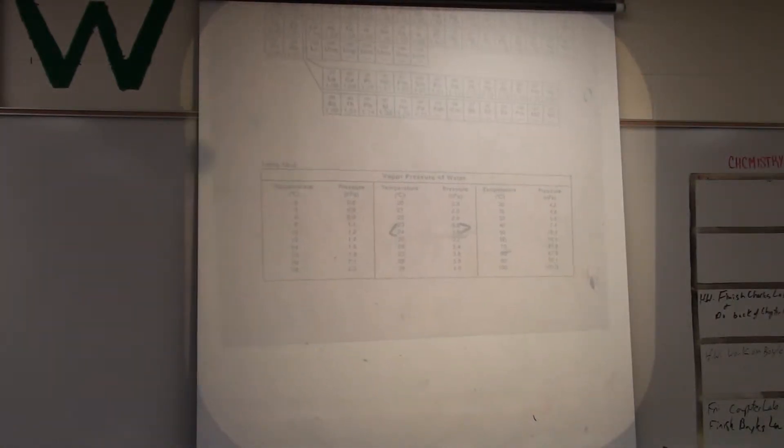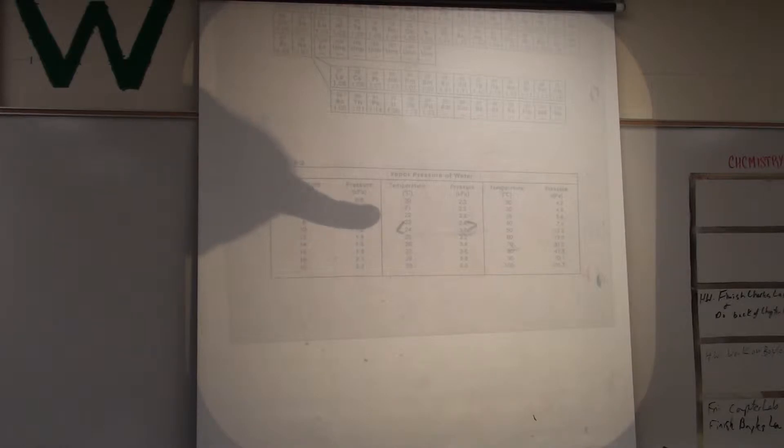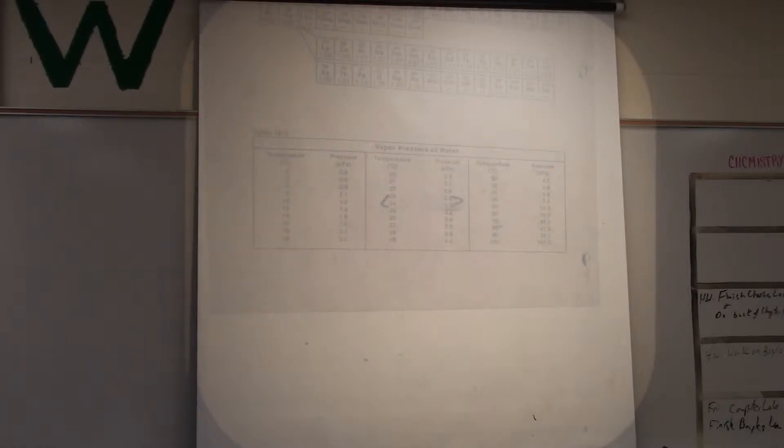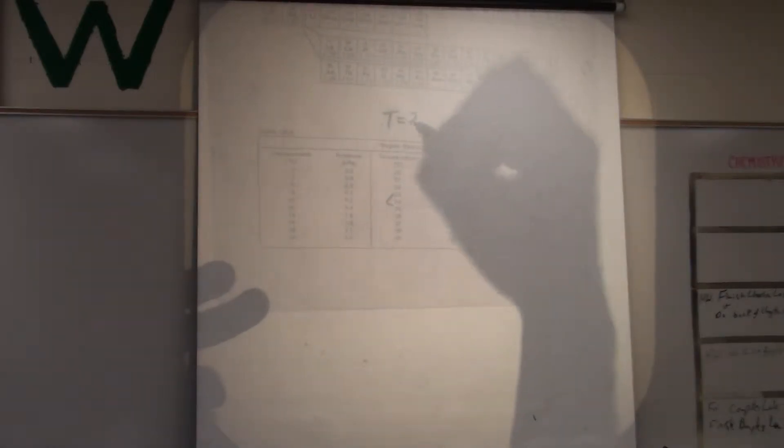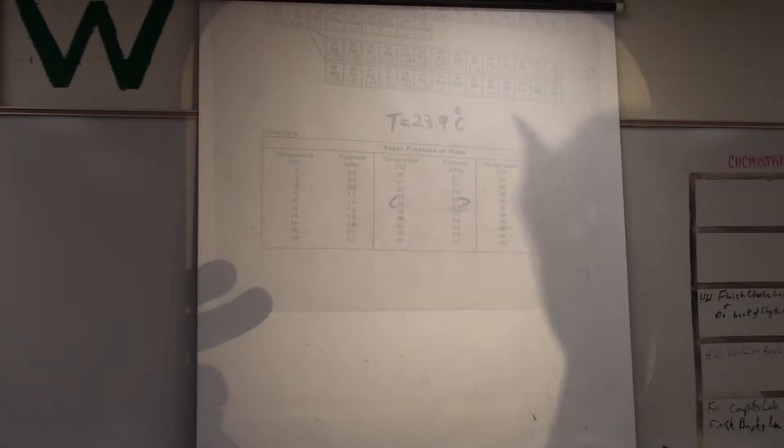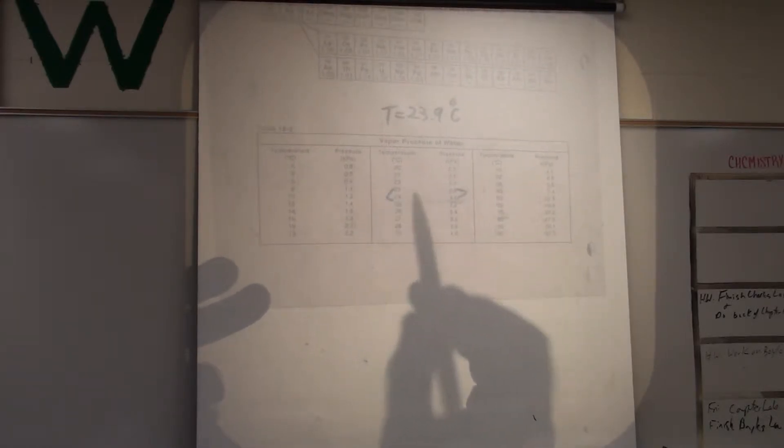So in the Boyle's Law Lab when you have to do your interpolation for the vapor pressure, you find your two points off the vapor pressure table. My temperature is 23.9 degrees Celsius which falls between 23 and 24.